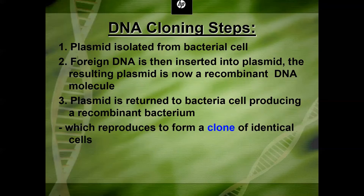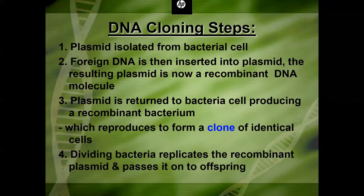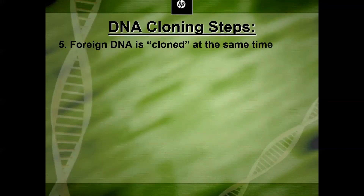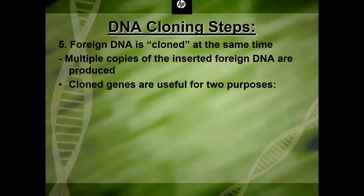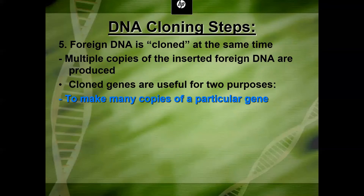This allows us to reproduce and clone the gene, making huge amounts of it. We place the bacteria in a petri dish in an incubator set at about 98.6°F and let it divide for a day or two. Every copy of that bacteria will now carry the cloned gene, as bacteria copy all their DNA — including the recombinant plasmid — before dividing. So we end up with multiple copies of that inserted foreign DNA.